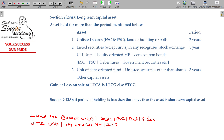The period of holding for these listed securities: if held for more than one year, it is a long-term capital asset. This is the general rule for listed securities, UTI units, equity-oriented mutual funds, and zero coupon bonds.